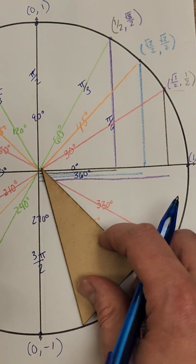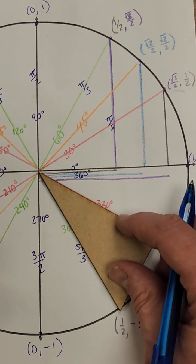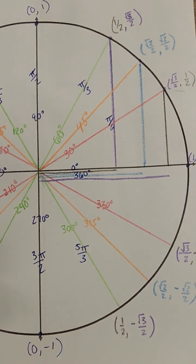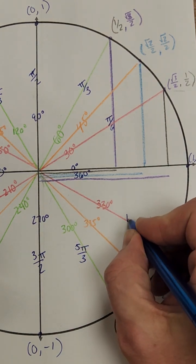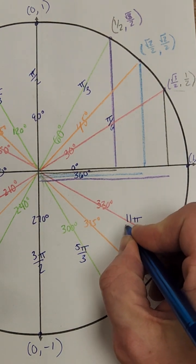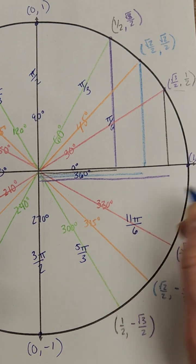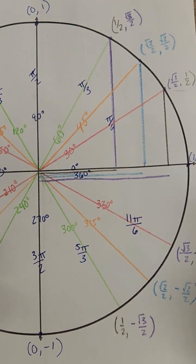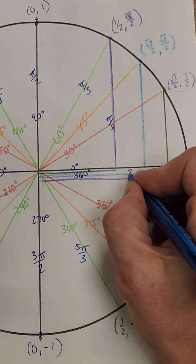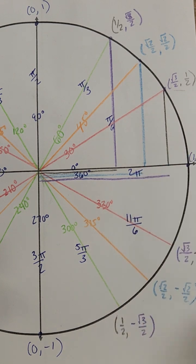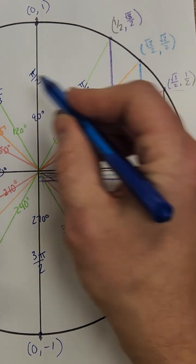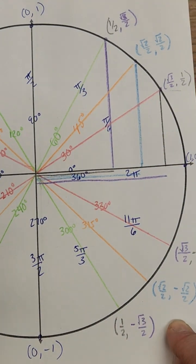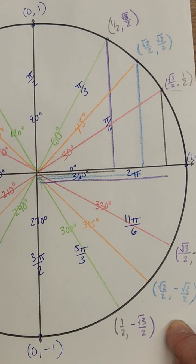That was our tenth sixth. Now we're up to the eleventh one — 11 over six doesn't reduce, so that's 11π/6. And then twelve sixths would reduce to 2π, which brings us all the way around. A full circle is back at 2π radians.